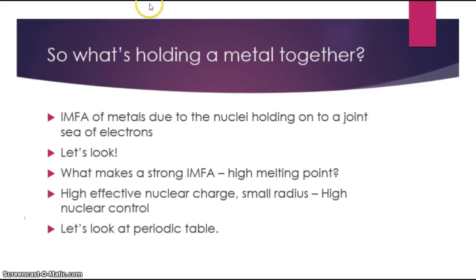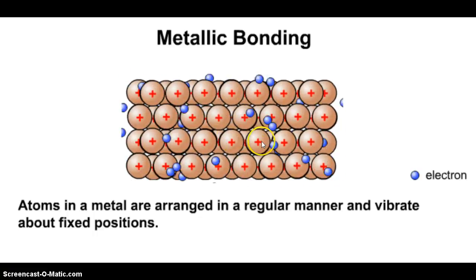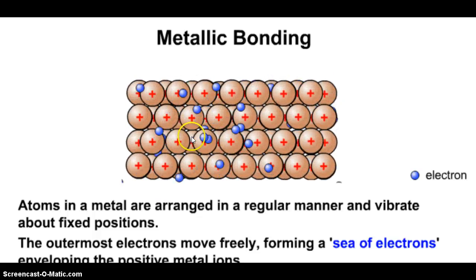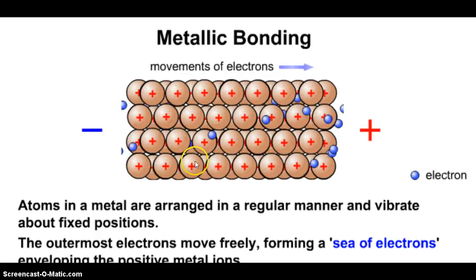So in a metal, we have to figure out what's holding it together. What holds the metal together is also another way to say what is the IMFA of the metal. The IMFA of the metal is due to the nuclei — those are many nucleuses — holding onto a joint sea of electrons. Hopefully you remember that metals are held together by a sea of electrons, and the nuclei, which are positively charged, are holding onto that sea of electrons. Here we have the nuclei, which are positive, and the blue represents the sea of electrons that are moving around. The stronger the attraction for the nucleus to these electrons, that would be the strength of the IMFA.